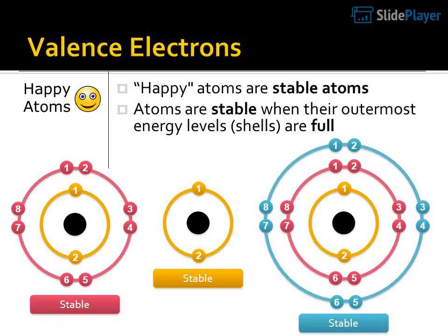Valence electrons. Happy atoms are stable atoms. Atoms are stable when their outermost energy levels — shells — are full.